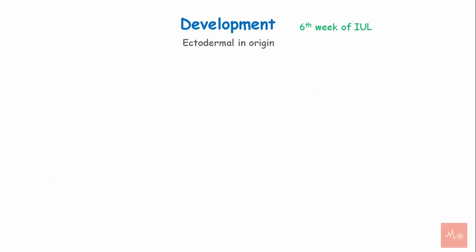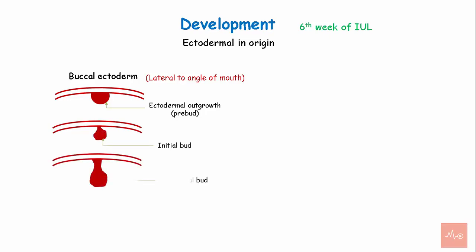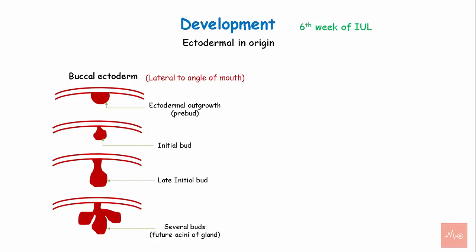Development of the parotid gland begins in the sixth week of intrauterine life. It is ectodermal in origin and develops from the buccal epithelium lateral to the angle of the mouth. The ectodermal outgrowth begins with the formation of a pre-bud, then an initial bud, late initial bud, and finally several buds that form the future acini of the gland. The ectodermal outgrowth branches to form the ductal system and the parotid acini.